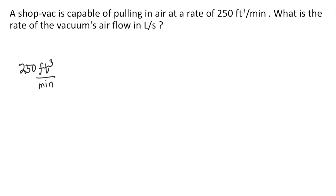First, we can convert minutes into seconds. We put minutes on top and seconds on the bottom. We know that one minute is equivalent to 60 seconds, so the minutes would cancel and now we have seconds in the denominator.